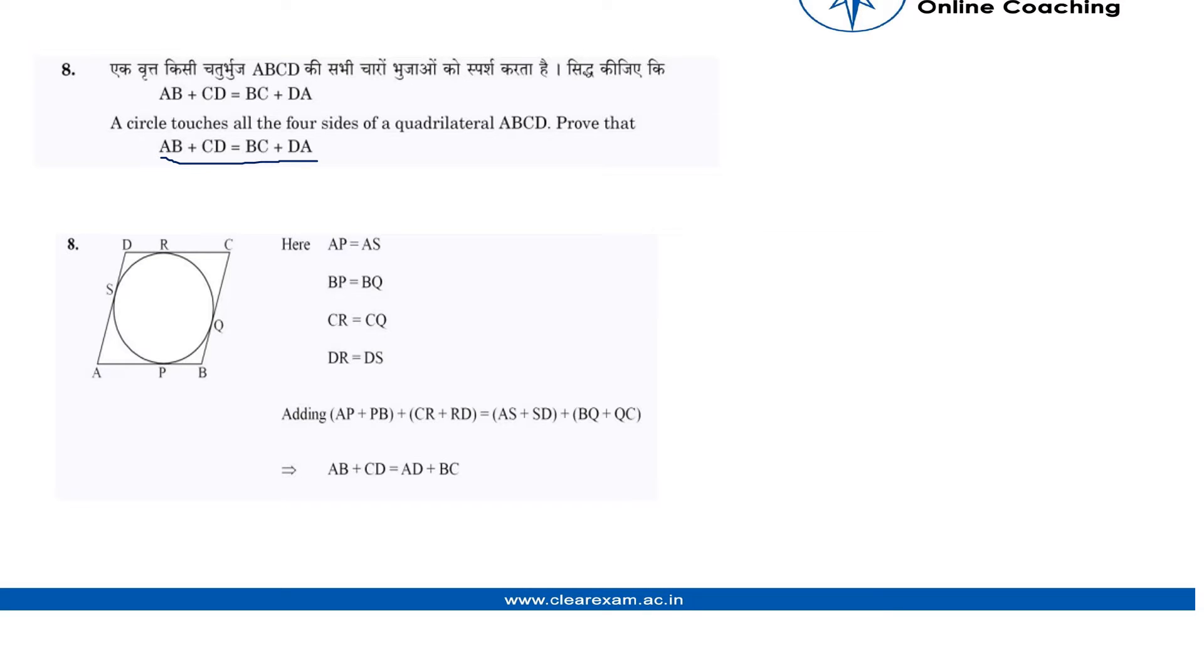Now, as the question itself says that the circle touches all the four sides of quadrilateral ABCD, then this circle, or we can say that these lines CD, CB, BA, and AD are the tangents to the respective points R, Q, P, and S.